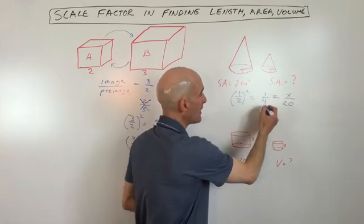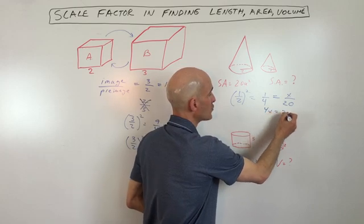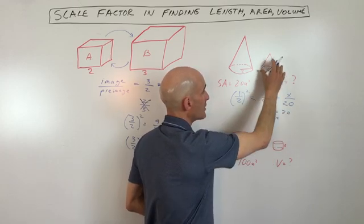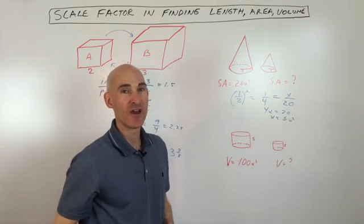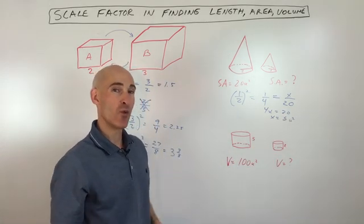So all we have to do is cross-multiply. You can see 4x equals 20 and that the area, the surface area of the smaller cone is going to be 5 units squared. Okay, so you're with me so far. Let's look at one last example.